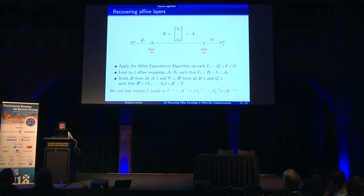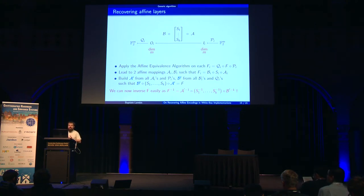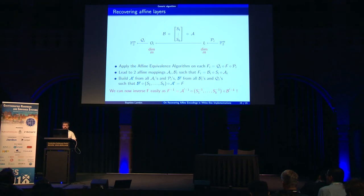Once you have all AI, PI, BI, QI for each S-box, you put them together correctly to get two affine mappings B' and A'. You can now write F, our encoded round function, as B' ∘ S-box layer ∘ A'. Since B' and A' are affine, they are easy to invert, and since all S-boxes are bijective, you can compute their inverses too. So you can easily compute an inverse of the encoded round function F.